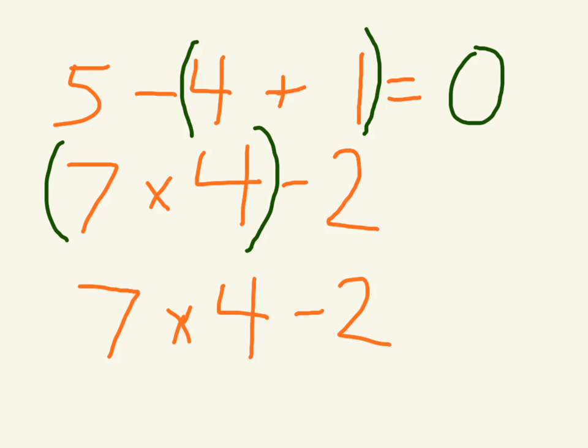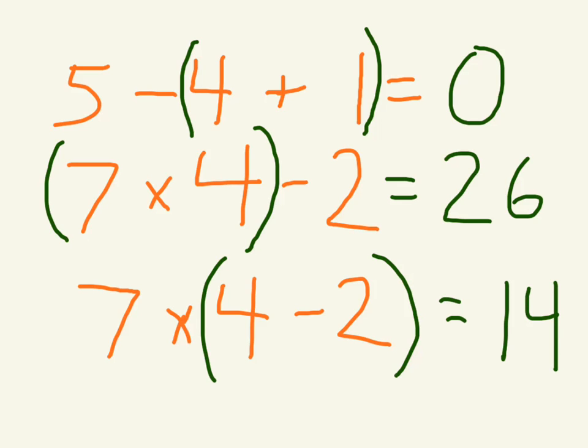So 7 times 4 would give us 28 minus 2. And then down here let me try to do this one first. So 7 times 4 minus 2. This is 2. So 7 times 2 would give me 14. So for numbers 5 and 6 you just make up some of your own, and you can solve them too while you're at it.